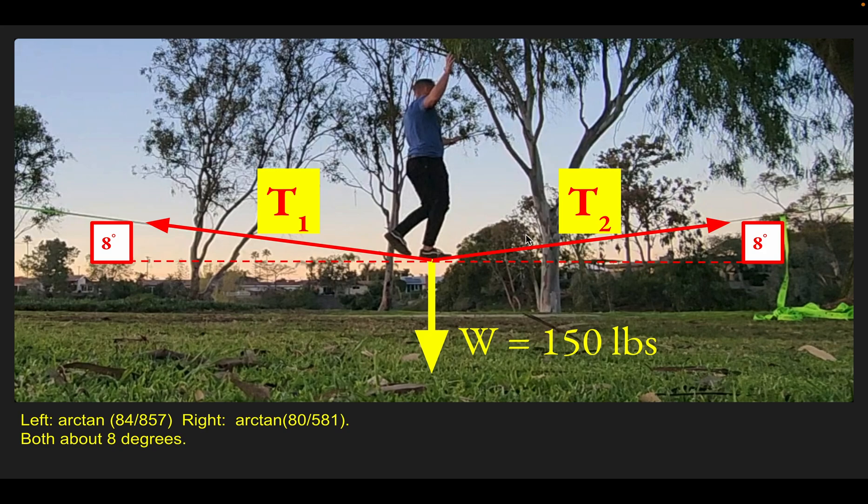Something else we need to know is the angle the line makes with the horizontal. I captured a movie still and counted pixels on the left and right—how many pixels to go left and then upward to match the angle of the line, then used arc tangent. In both cases, the angle is about 8 degrees.